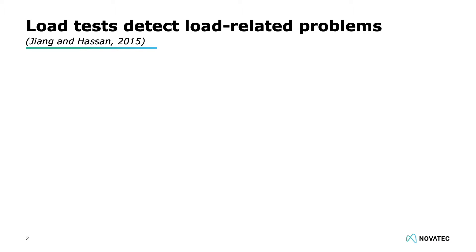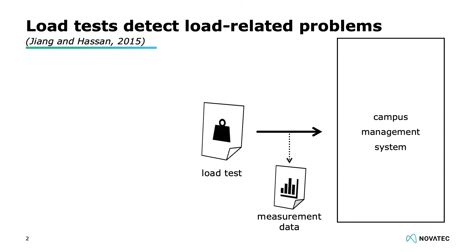We are dealing with load testing. Djang and Hassan define it as follows: a load test executes a workload against a system under test — let's imagine a campus management system here — and during the execution, measurement data like response times are collected. These data can then be used to detect functional and non-functional load-related problems.